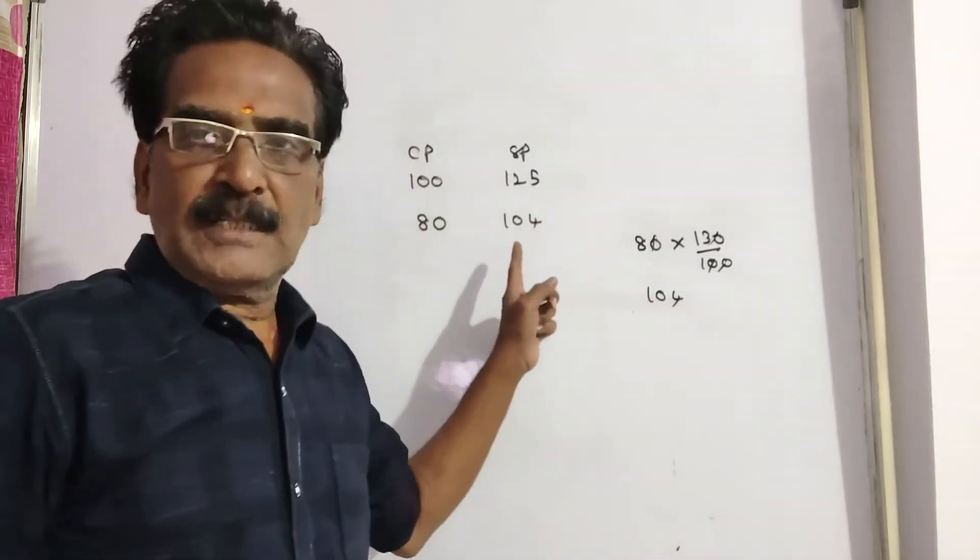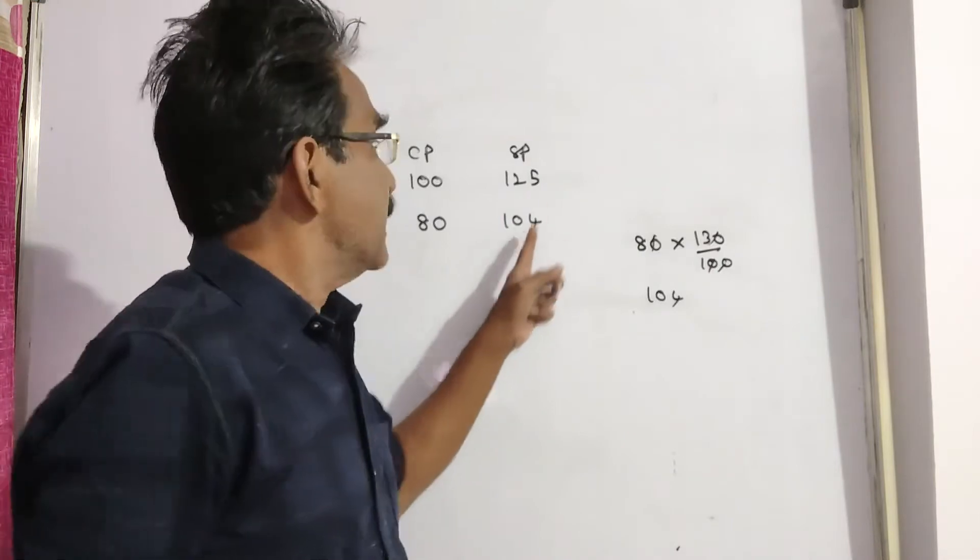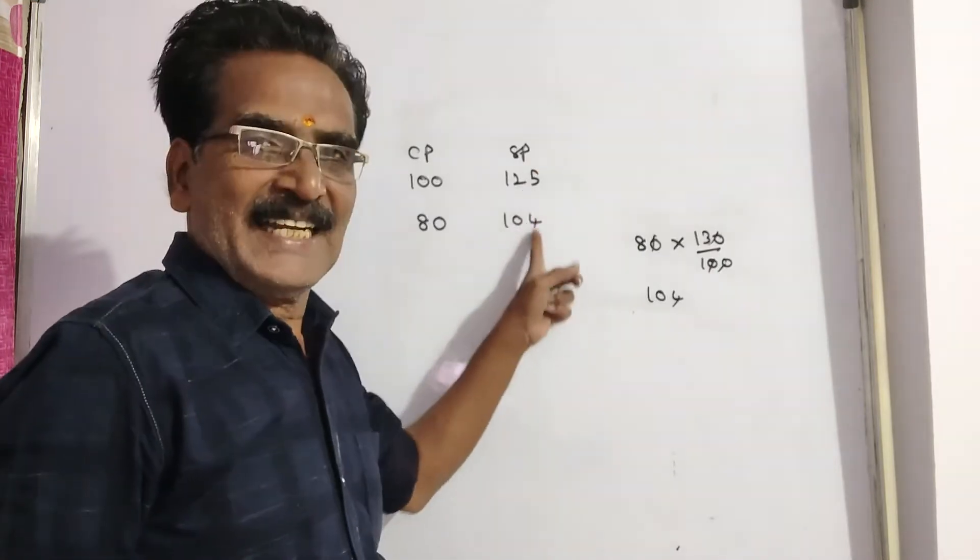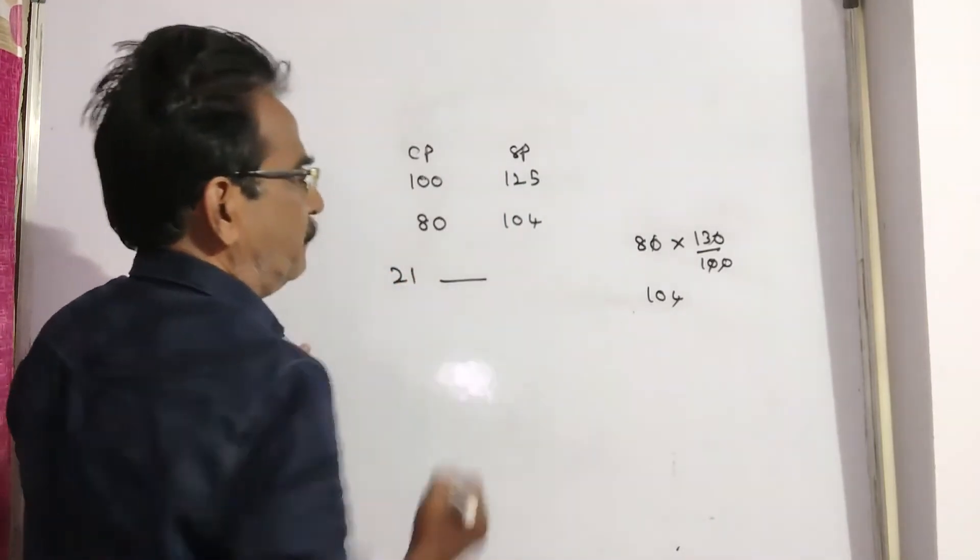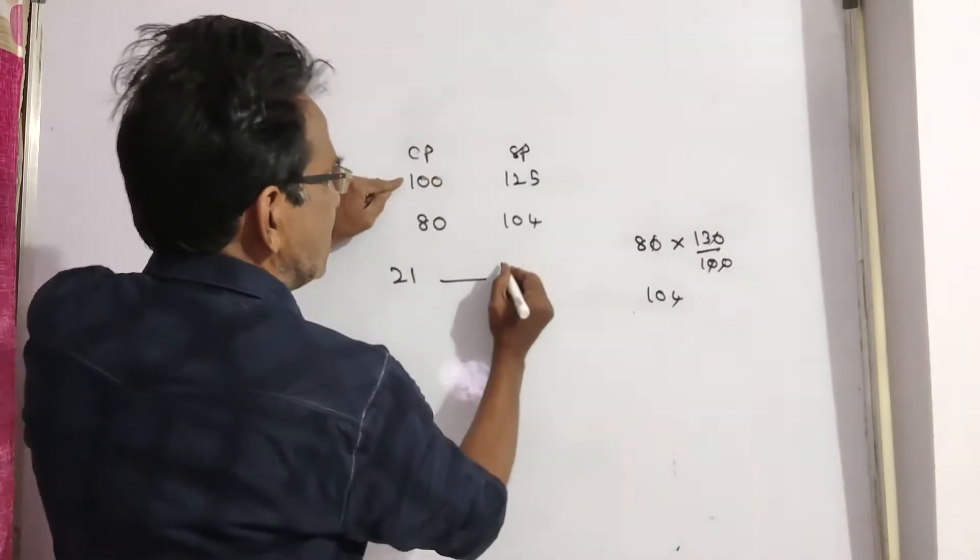This 104 new sold price is 21 rupees less than the earlier sold price. If 21 rupees less than the earlier sold price, then the cost price is 100.